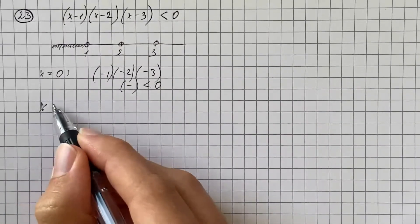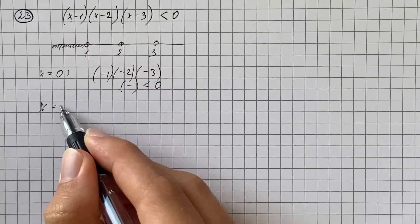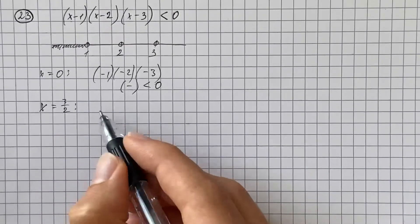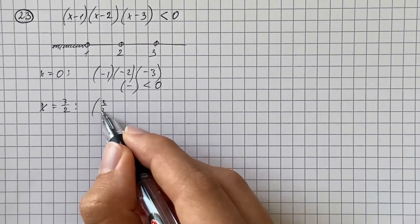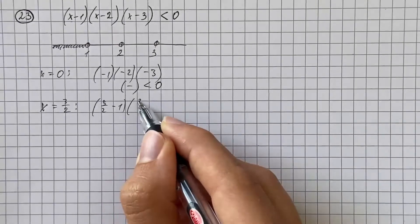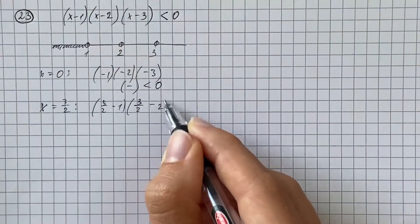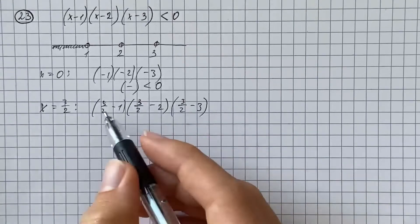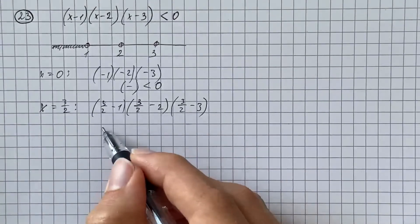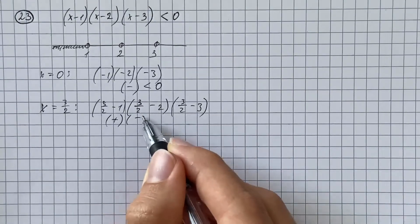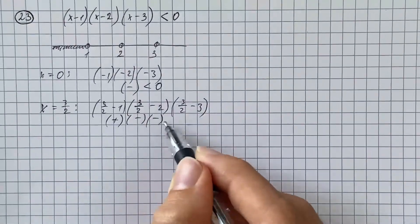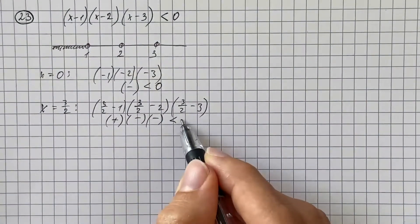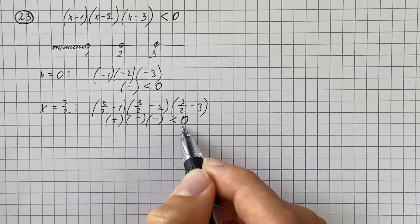The next number to check is x equals 3 halves. We get (3/2 minus 1) times (3/2 minus 2) times (3/2 minus 3), which is positive times negative times negative — that gives a positive number, which is not less than 0.